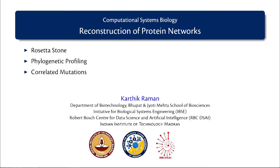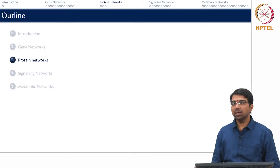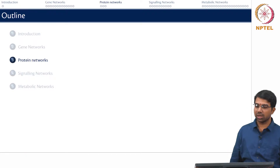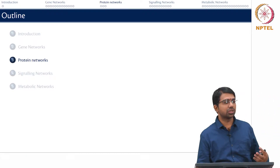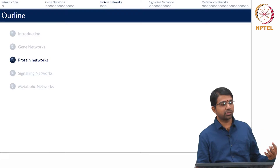In today's video, let us look at reconstruction of protein networks or protein interactomes. There are a few interesting methods that are mostly sequence-based that have gone into building these kinds of networks, such as Rosetta Stone, phylogenetic profiling, and correlated mutations. Let us look at protein networks which are very commonly analyzed and often used for predicting different kinds of things.